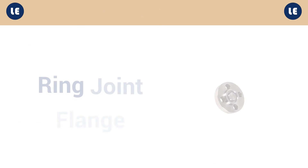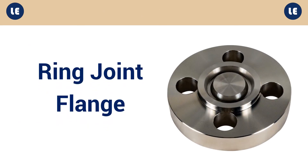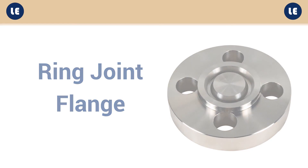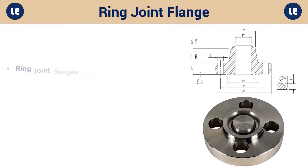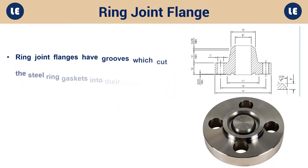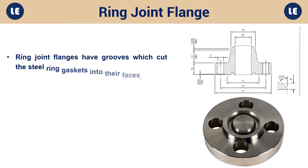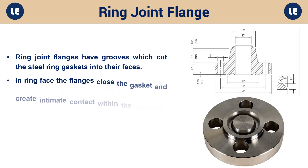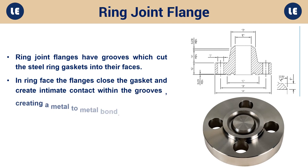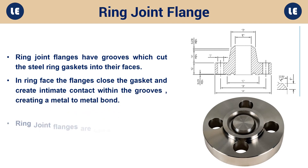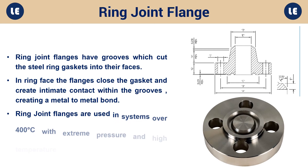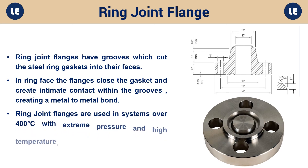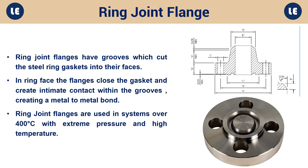Ring joint flange: Ring joint flanges have grooves which cut the steel ring gaskets into their faces. In ring face, the flanges close the gasket and create intimate contact within the grooves, creating a metal-to-metal bond. Ring joint flanges are used in systems over 400 degrees Celsius with extreme pressure and high temperature.